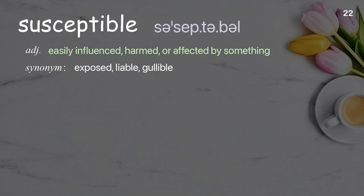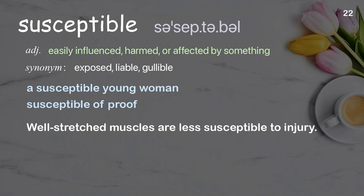Susceptible: easily influenced, harmed, or affected by something. Examples: a susceptible young woman, susceptible of proof. Well-stretched muscles are less susceptible to injury.